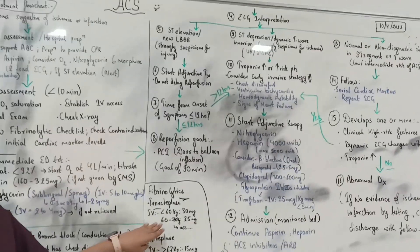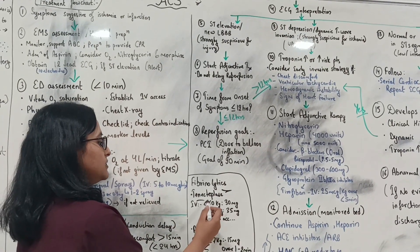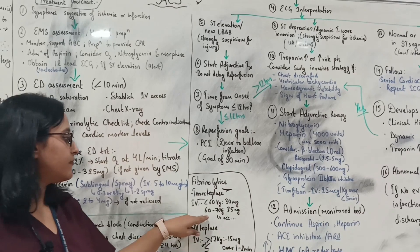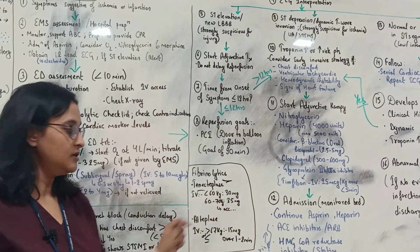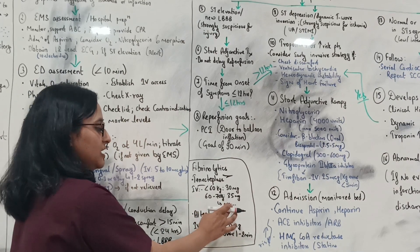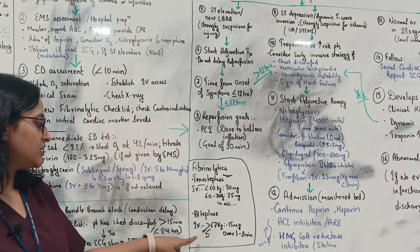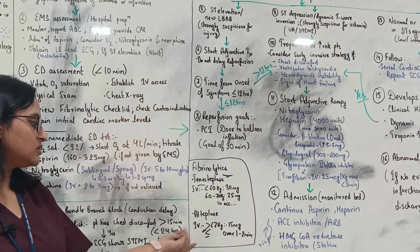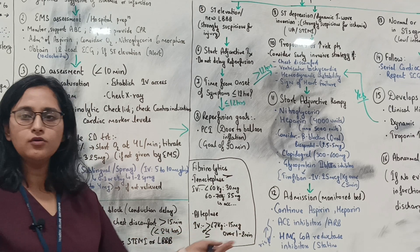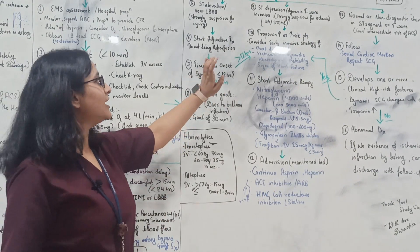For fibrinolytic administration, tenecteplase (TNKase) is dosed by weight: 30 mg if less than 60 kg, 35 mg if 60–70 kg, 40 mg if 70–80 kg, and so on. Alteplase can also be given IV — for example, 15 mg over 1–2 minutes for patients around 67 kg or above.